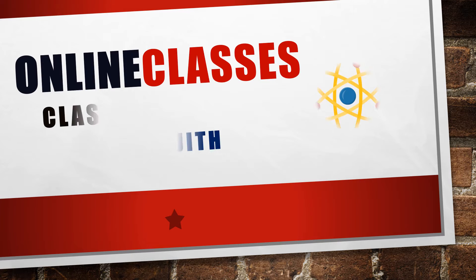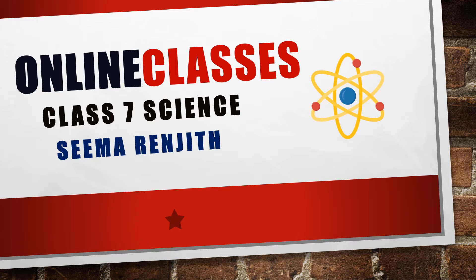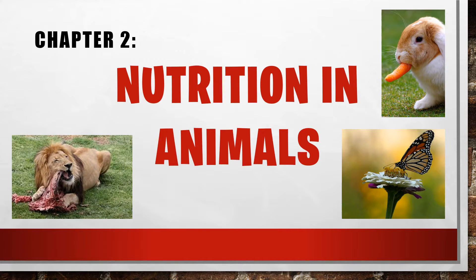Hello children, welcome to 7th science online classes. Today's topic is nutrition in animals. In the last class we studied absorption in the small intestine. The digested food absorbed by the blood vessels of the small intestine is called absorption. Finger-like projections called villi increase the surface area for absorption. Today we are going to study the large process of nutrition, that is digestion.